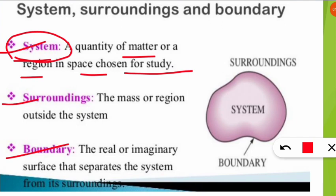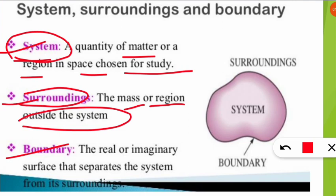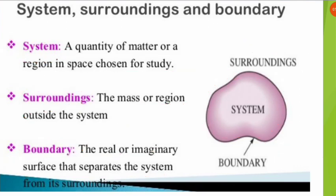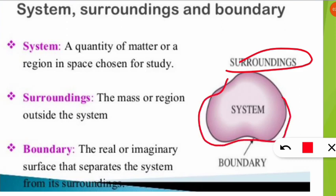The surroundings is the mass or region outside the system. If this is the system, then the region outside that boundary is the surrounding. The boundary is the real or imaginary surface that separates the system from its surroundings. As you can see, the black boundary separates the system from the surroundings; in some cases this boundary may be imaginary.